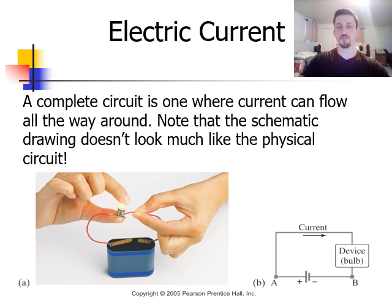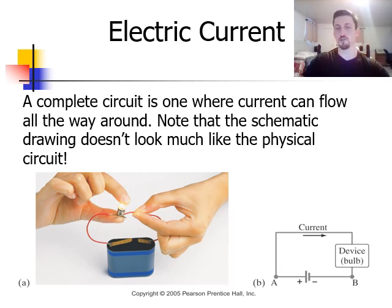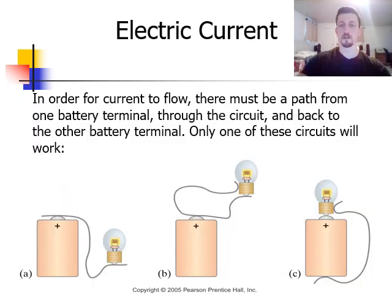When we talk about circuits, a complete circuit is any one where current can flow all the way around. So you need a connection from the positive terminal of the battery through a conducting material, through any light bulbs like this picture here, and then all the way through to the negative terminal uninterrupted for current to flow and for the circuit to be considered complete. Also on this slide, you can see how the drawings that we use in physics to represent circuits don't necessarily look much like the actual physical circuits. This circuit on the left where you can see the battery and the light bulb and the wires connecting them is the same as this diagram on the right, which is how we draw circuits in physics.